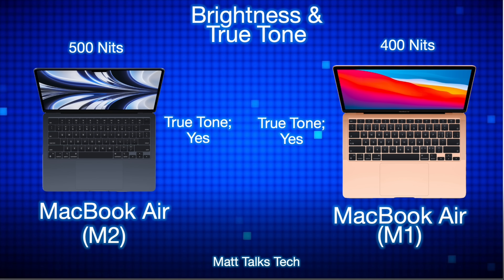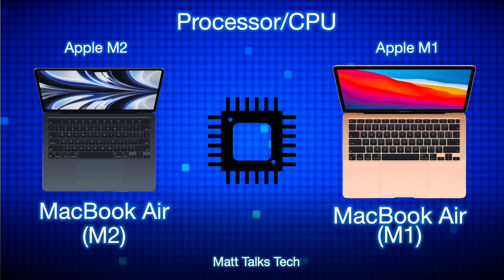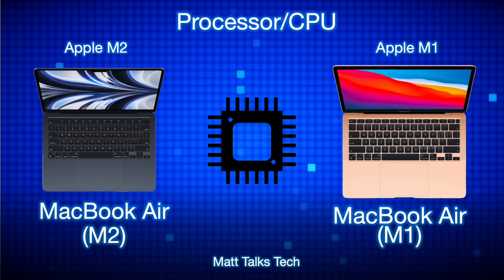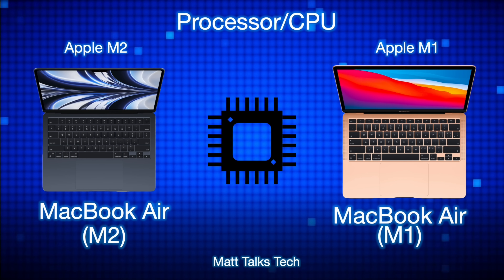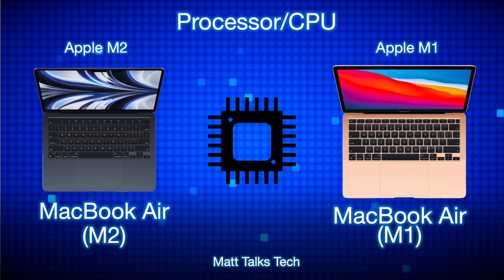Moving to the processor — probably the biggest change. The MacBook Air M1 had an 8-core CPU with a choice of 7 or 8-core GPU. The M2 still has an 8-core CPU but it's up to 20% more powerful according to Apple. The GPU is different too — the base M2 comes with 8 cores, up from the M1's 7-core option, and you can configure up to a 10-core GPU.